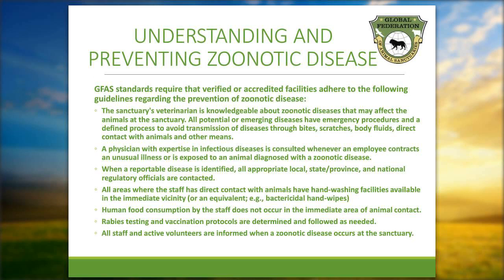When a reportable disease is identified, all appropriate local, state, provincial, and national regulatory officials are contacted. That's usually done by your veterinarian, but you should follow up and make sure that all the appropriate people have been contacted. All areas where staff have direct contact with animals have washing facilities available in the immediate vicinity or an equivalent such as bacterial hand wipes. Human consumption by staff does not occur in the immediate area of animal contact. Rabies testing and vaccination protocols are determined and followed as needed. All staff and active volunteers are informed when a zoonotic disease occurs at the sanctuary.